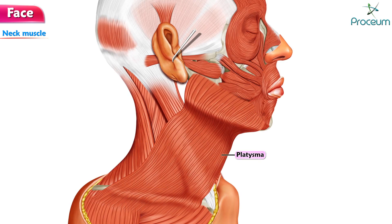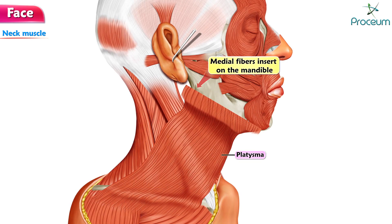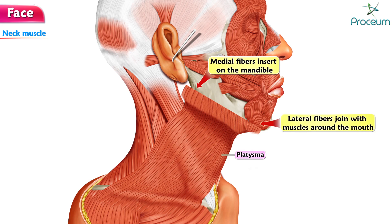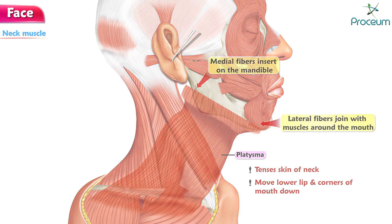At this point, the more medial fibers insert on the mandible, whereas the lateral fibers join with muscles around the mouth. The platysma tenses the skin of the neck and can move the lower lip and corners of the mouth down.